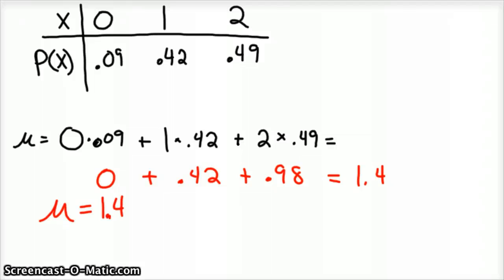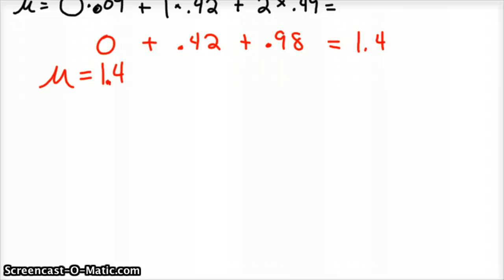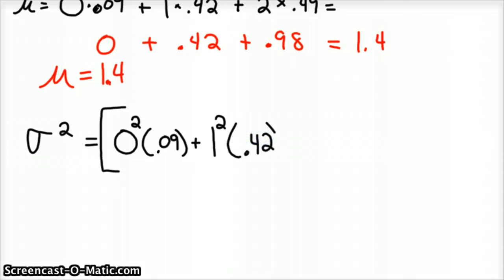So then we go to variance, and variance, somewhat similar to what we did with variance with regular data. So sigma squared, we're going to square each of our values and then take it times the probability. So 0 squared times 0.09 plus 1 squared times 0.42 plus 2 squared times 0.49 minus your mean squared. And we know what the mean is, it's 1.4, minus 1.4 squared.